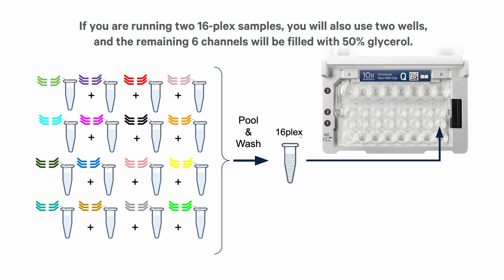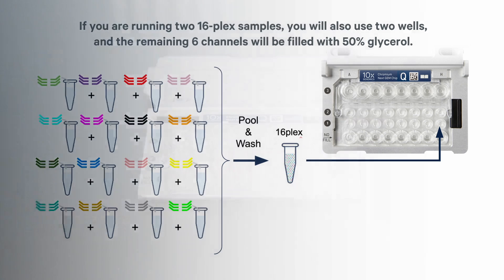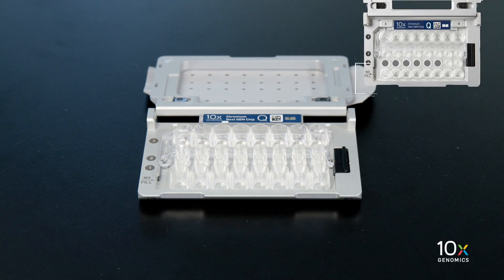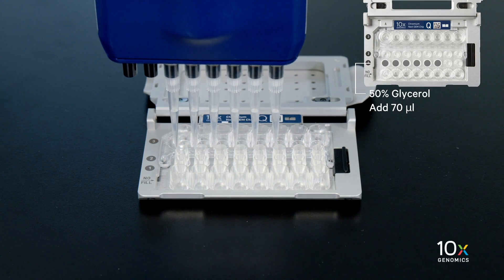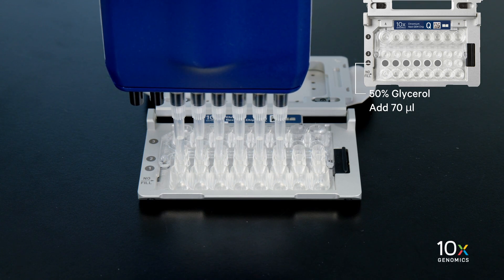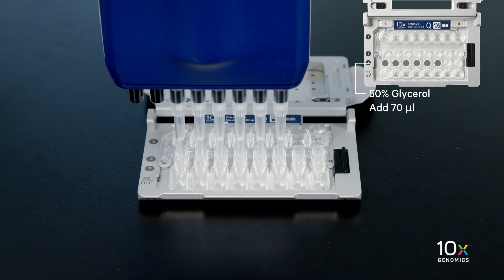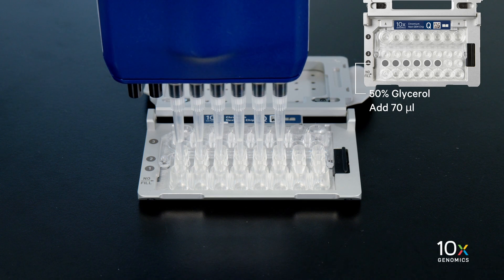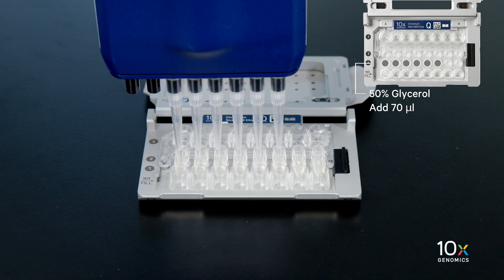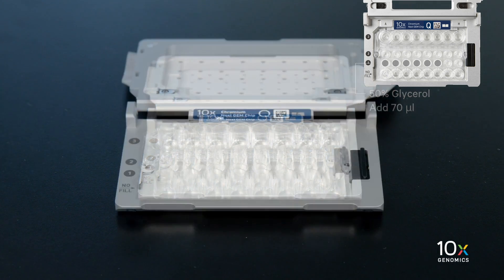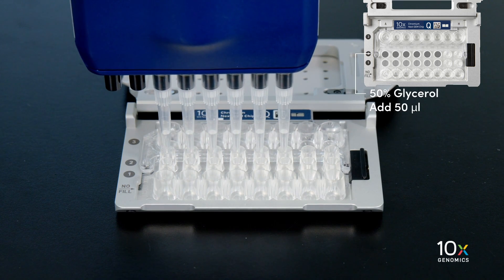The remaining six channels will be filled with 50% glycerol. We will add 70 microliters of 50% glycerol to unused wells in the row labeled one. When you pipette into the chip, gently touch the pipette tips on the bottom surface and slowly pull up the pipetter as you are dispensing. Next we will add 50 microliters of 50% glycerol to unused wells in the row labeled two.